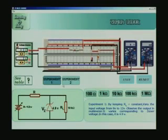The second experiment would be I will keep this voltage constant and vary the value of the load and see what happens. These two are called two different characteristics of a regulated voltage supply.